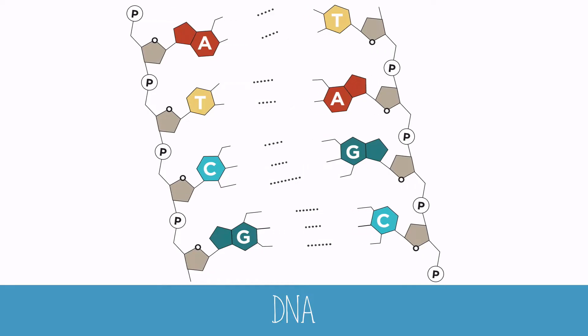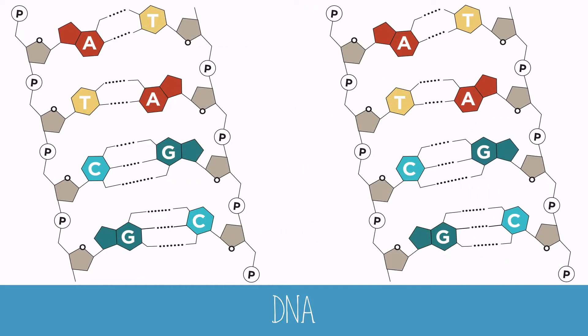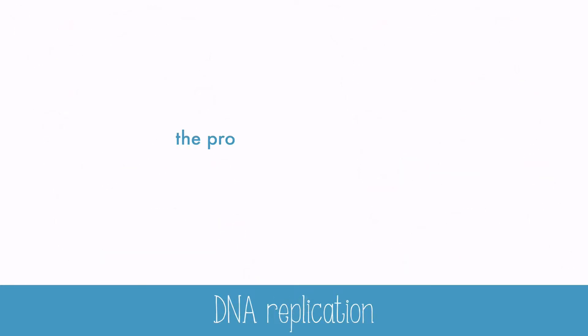One of the most paradoxically simple and complex things about the structure of DNA is how it replicates. DNA replication is how DNA makes an exact copy of itself, which it needs to do before the cell divides. In this video, I'll focus largely on DNA replication in prokaryotes.